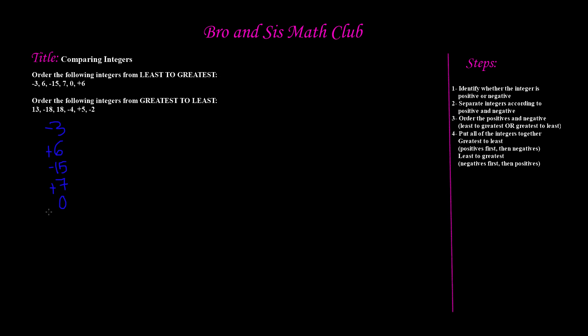You will always have the negatives on the left side of the number line, and 0 is the boundary between the negatives and the positives, which are on the right side. So 0 is not positive or negative — don't think that just because 0 does not have a sign it's a positive, because it is not. Our last integer is positive 6 because it has a plus sign in front of it. So if it has a minus sign it's negative, plus sign it's positive.